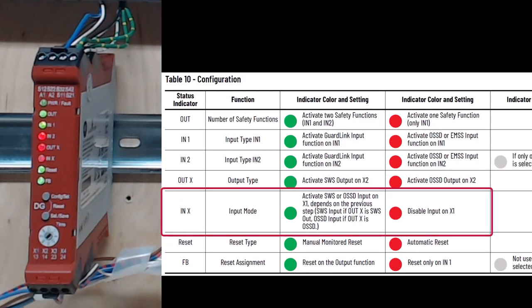The in X LED is flashing red, because you do not want to use the X1 terminal as an OSSD input. You would change it to green if you wanted to enable the X1 input. Keep in mind that the X1 input will always match the type of signal configured for out X. Both would either be OSSD or single wire safety. Short press the select button while the color is red to disable the in X signal.